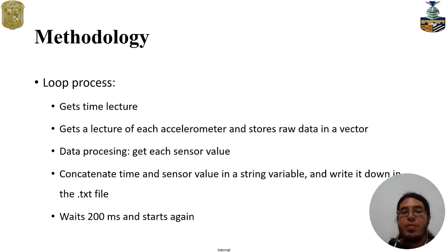Then, it has a loop process where it gets a time reading. Then, it gets a reading from the accelerometer and stores the raw data in a vector from the five accelerometers. Then, with some data processing, it gets each sensor value and concatenates the time and the sensor value in a string variable, and writes all this string in the txt file that is stored in the SD card. And it waits also 200 milliseconds to start the loop again.